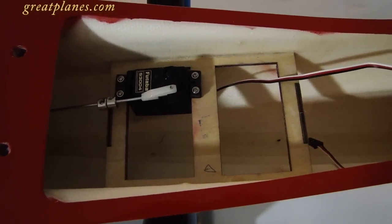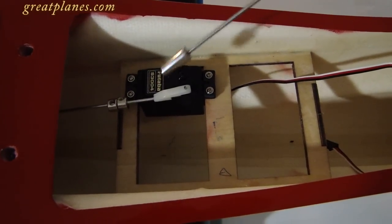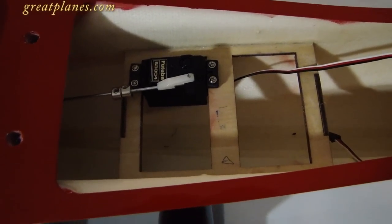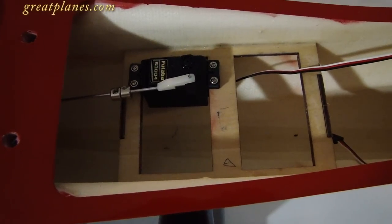This is our elevator servo, a Futaba S3004. We have the push rod installed and our fast link installed. We did power the servo up and center it before we installed our push rod into the servo arm.